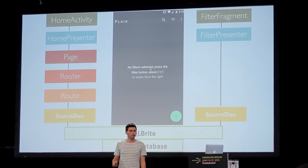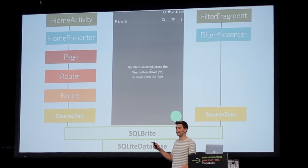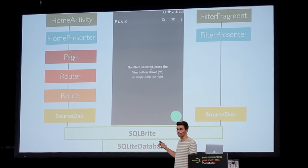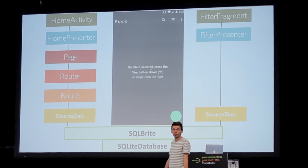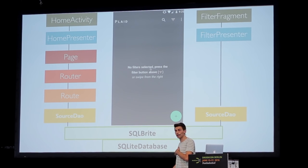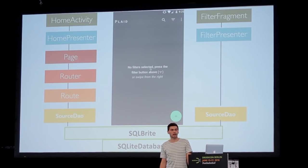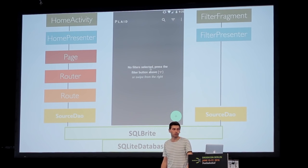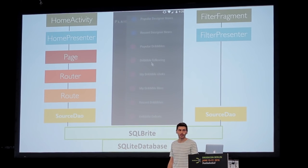Now let's put it all together — we have the SourceDAO, the Route, the Router, and the PageIndex, connected with RxJava, making them all observable. I'll show a short video. We start with the screen, collapse the filter drawer on the right and enable a source. The FilterPresenter is connected to the SourceDAO and has queried all filters, while on the left the HomeActivity is connected through the page/router/SourceDAO chain to load items.